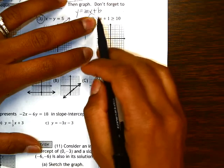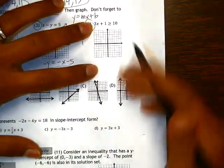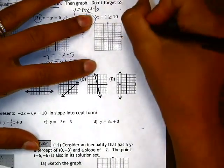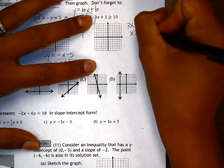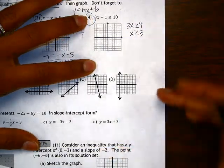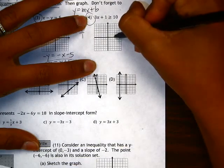Okay, here you'll notice there is no y. So let's see if we can isolate the x. So 3x is greater than or equal to 9, which means x is greater than or equal to 3.